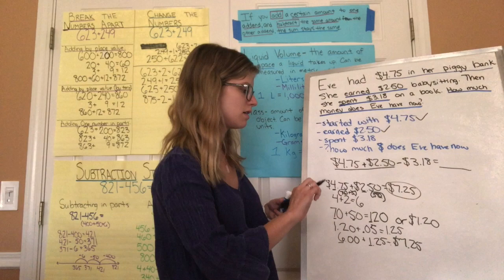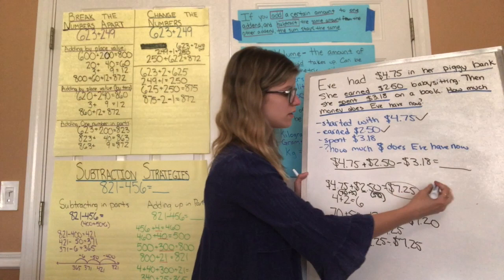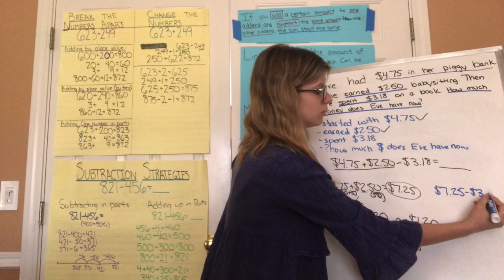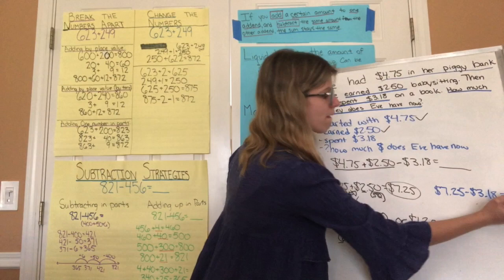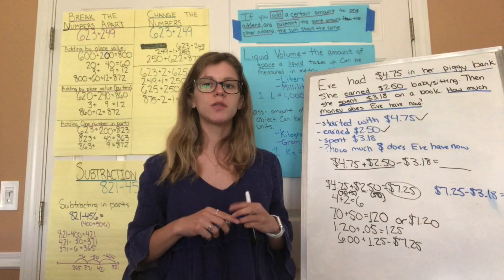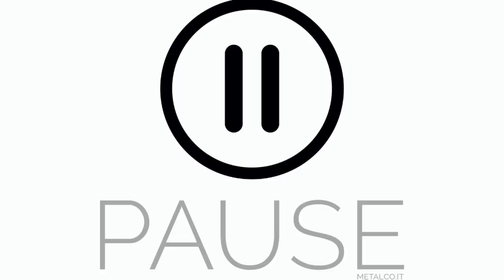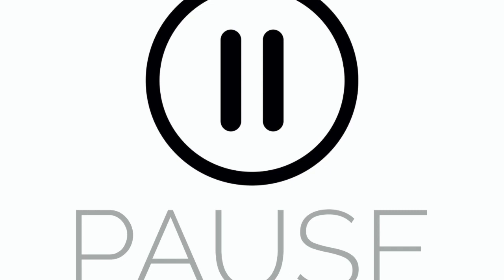Now I need to take my solution from those two addends and subtract three dollars and eighteen cents. So my problem is seven dollars and twenty-five cents minus three dollars and eighteen cents. I want you to pause and use the subtraction strategy of breaking down only one of the numbers into parts — break down three dollars and eighteen cents into parts and subtract it from seven twenty-five.